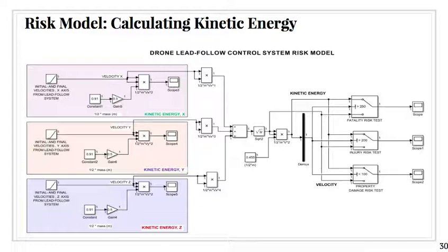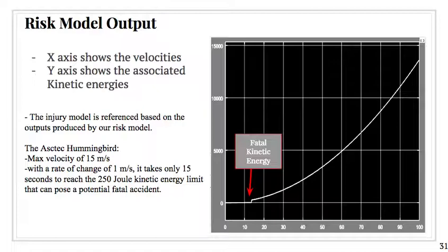We were able to use our drone in our risk model to evaluate the specific fatality, injury, and property damage risks associated. It basically uses the different inputs of the Aztec hummingbird drone in order to see what outputs would happen and see if the specific joule level would be high enough for a fatality to happen, an injury to happen, or any damage to property to occur. Our output showed for the Aztec hummingbird that about 15 meters per second would be the max velocity for an Aztec hummingbird to create a fatal injury risk.